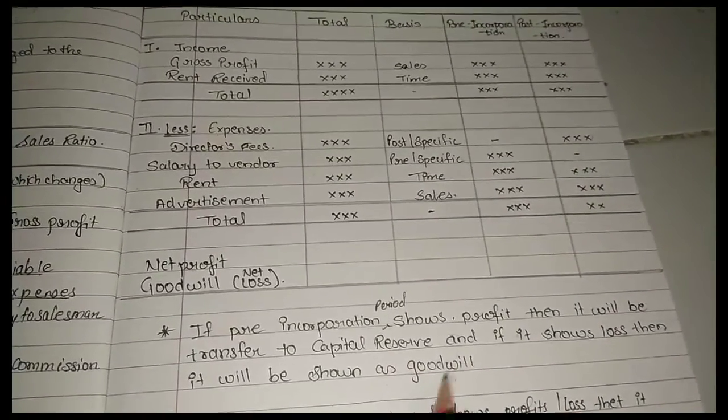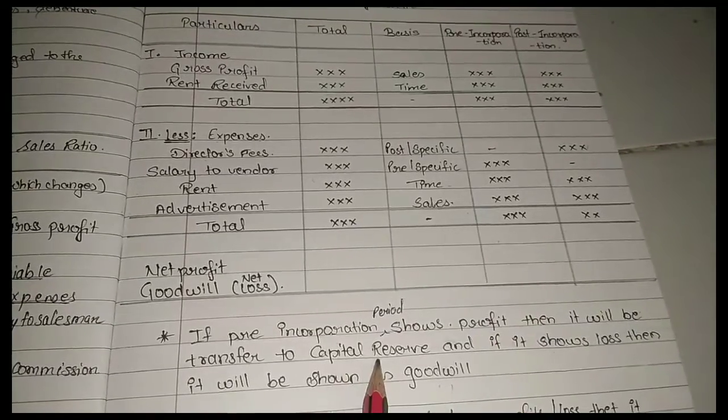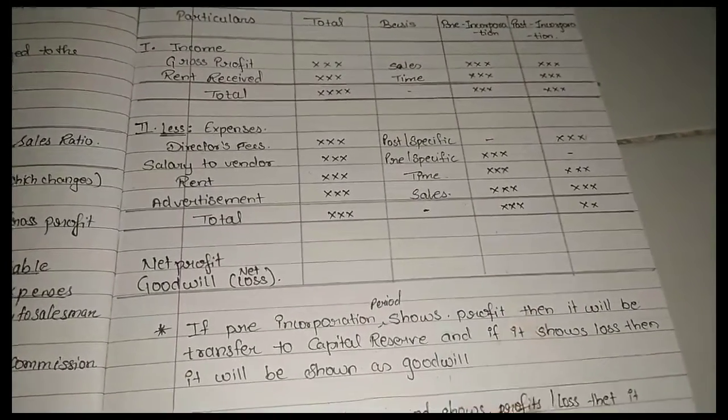And if it shows loss, then it will be shown as goodwill. If profit, capital reserve is created.